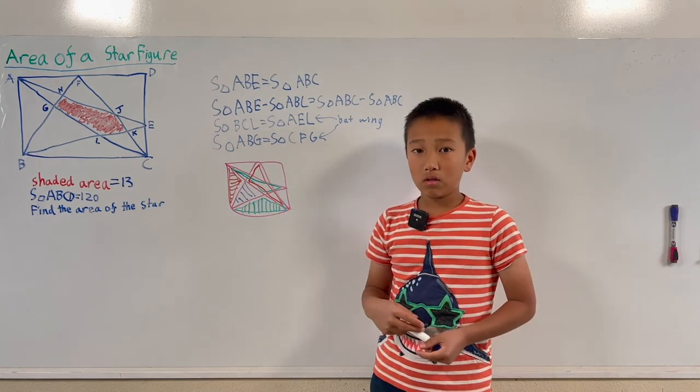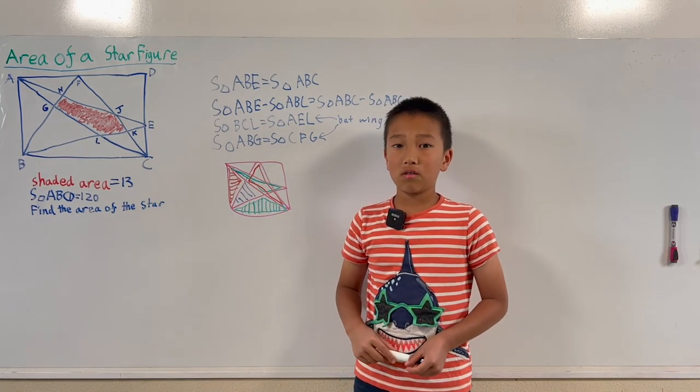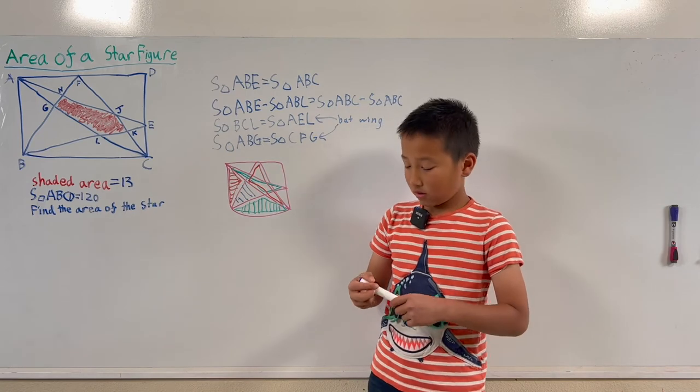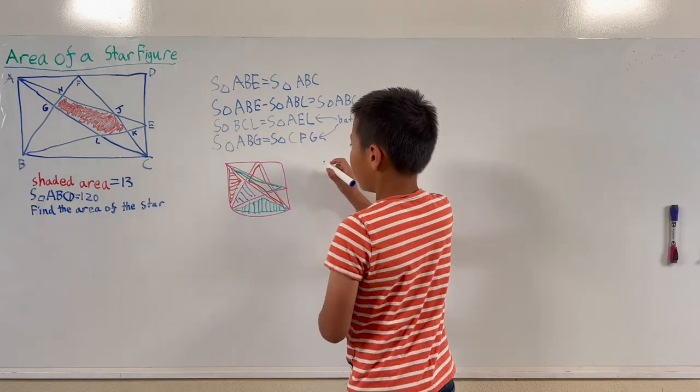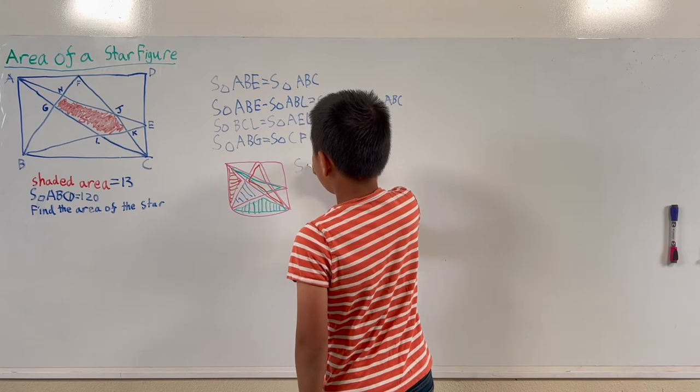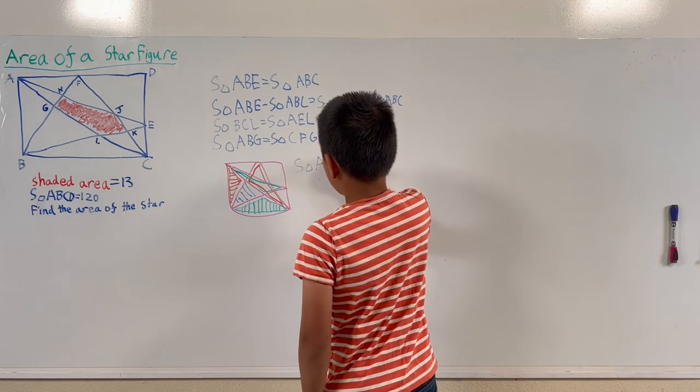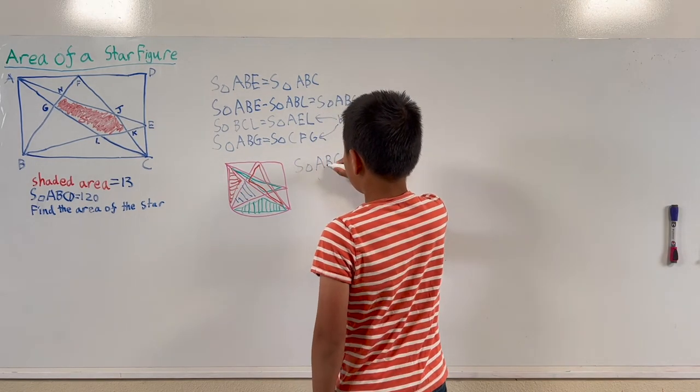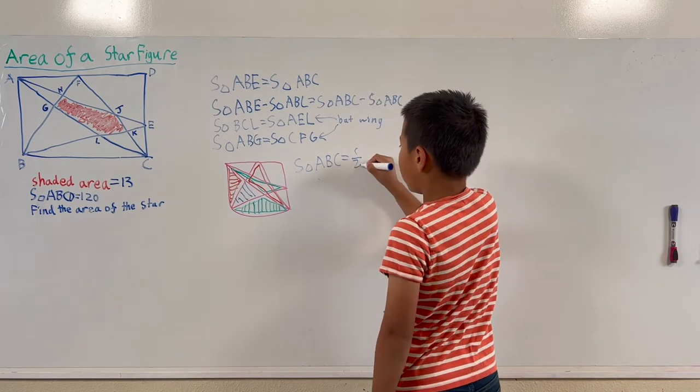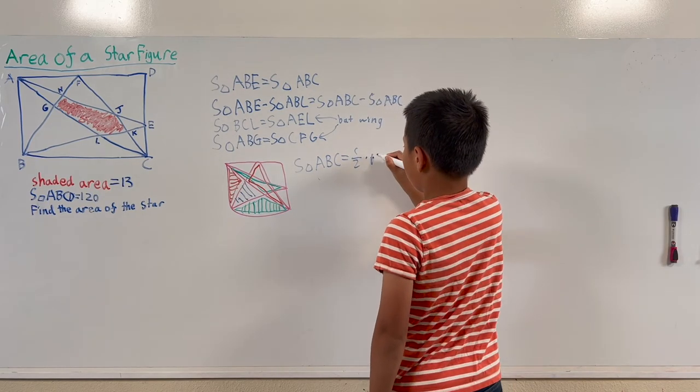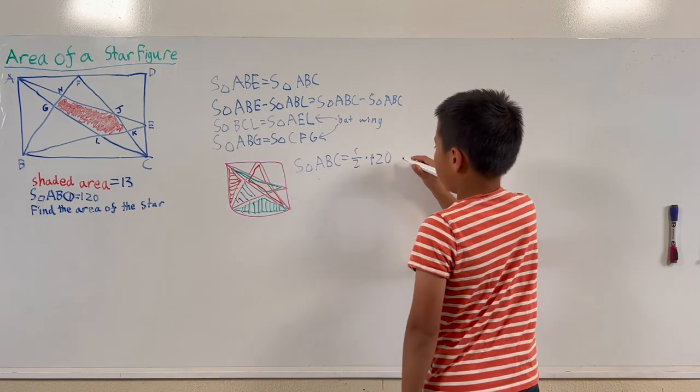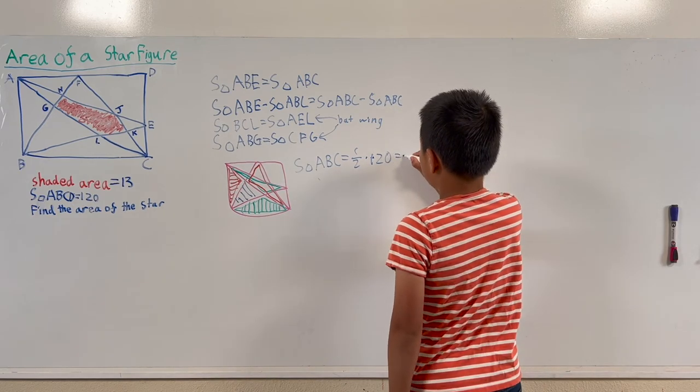So what we must do is subtract the area of the red pentagon from that right triangle. So the right triangle is ABC and the area of ABC is a half multiplied by 120, which is the area of ABCD, equals 60.